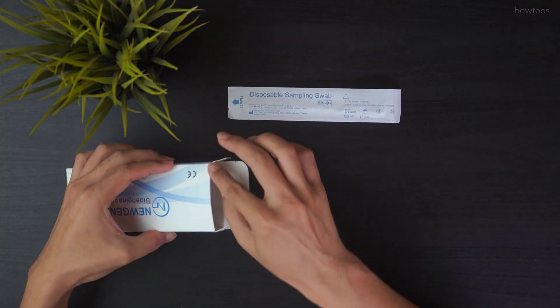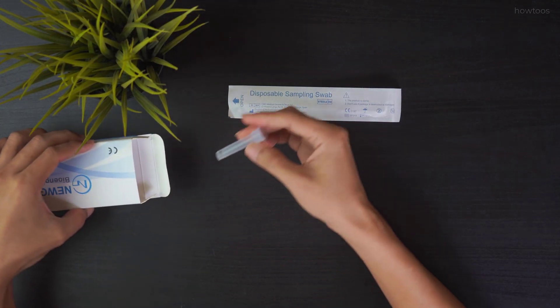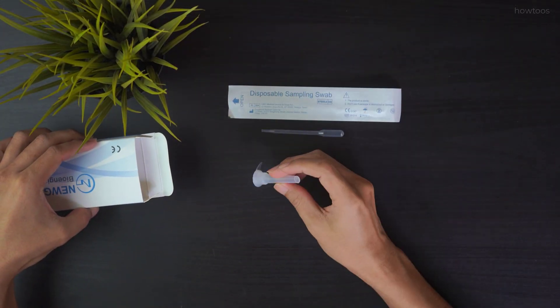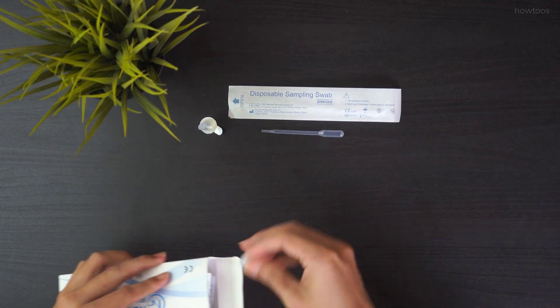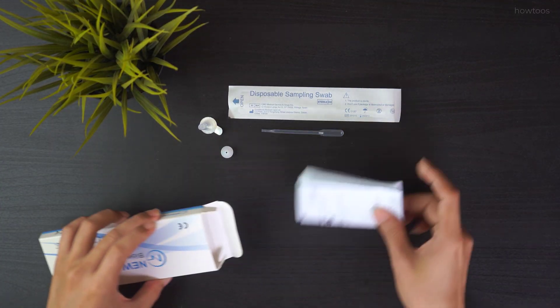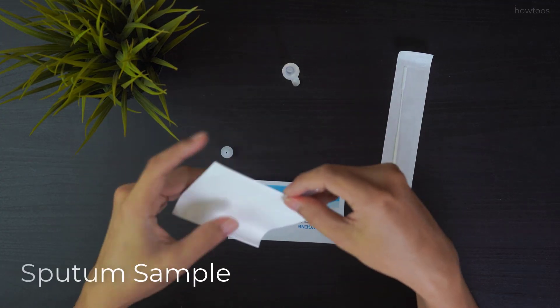You will receive a disposable swab, a dropper, a swab tube collector with reagent inside the tube, a cap to close the tube, a product manual, and a test card. For the saliva test you will need to collect sputum samples onto the small bag.